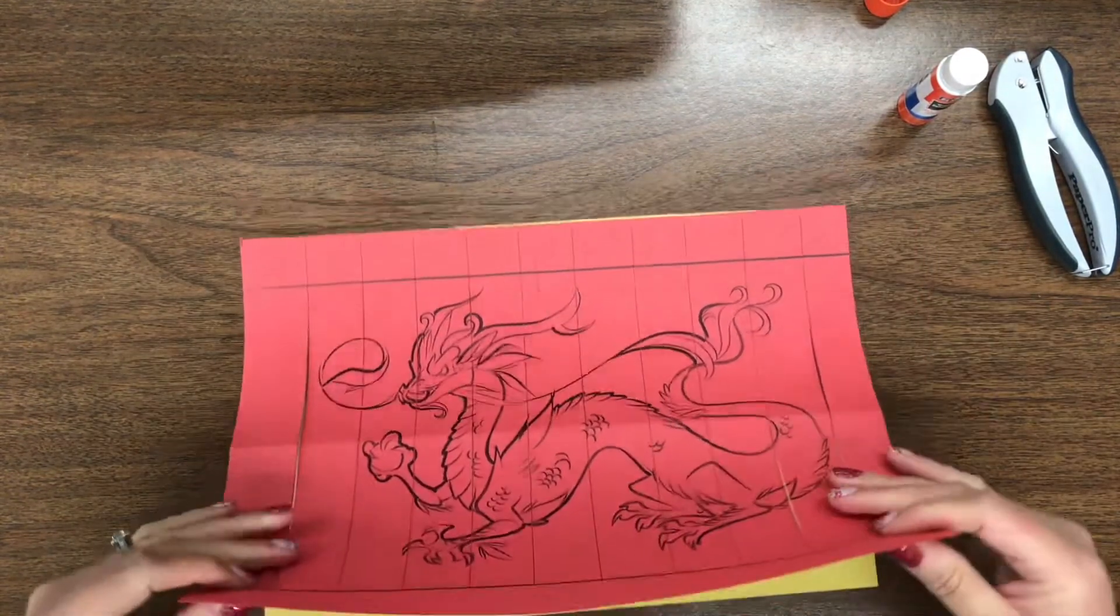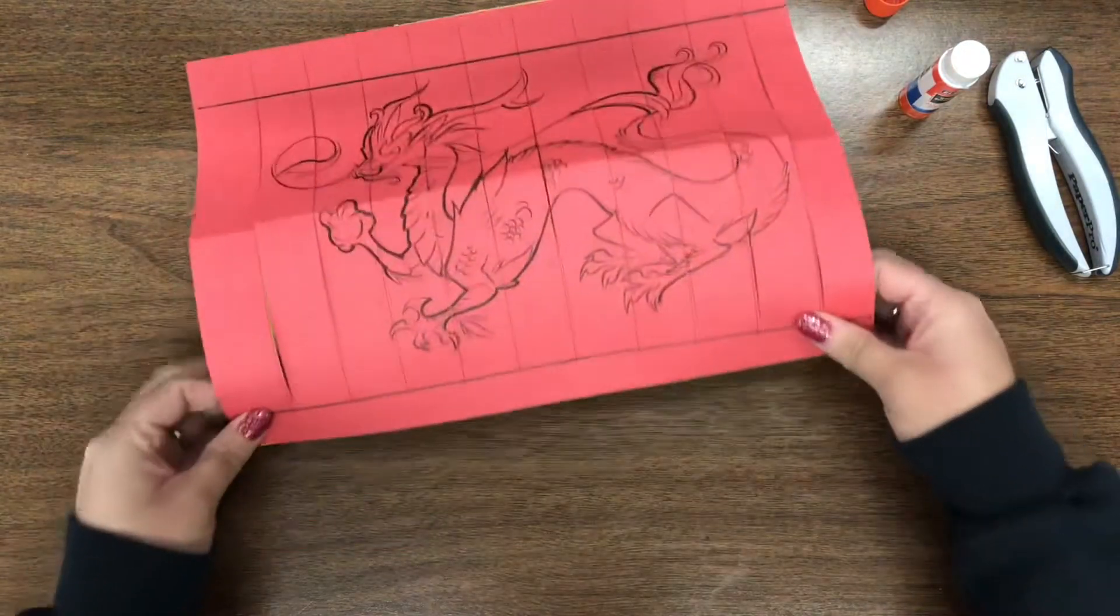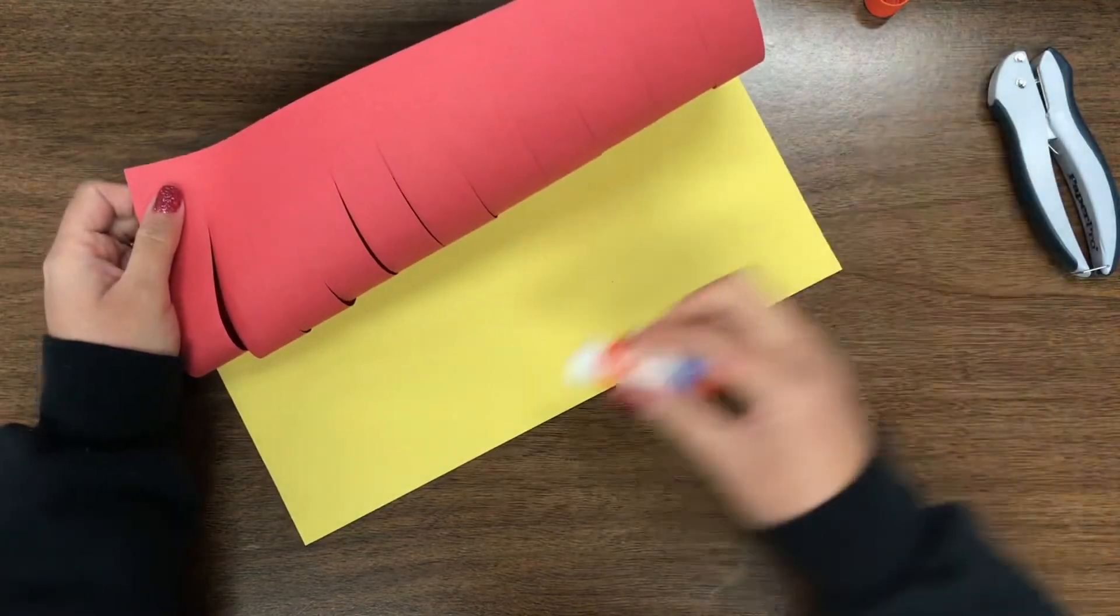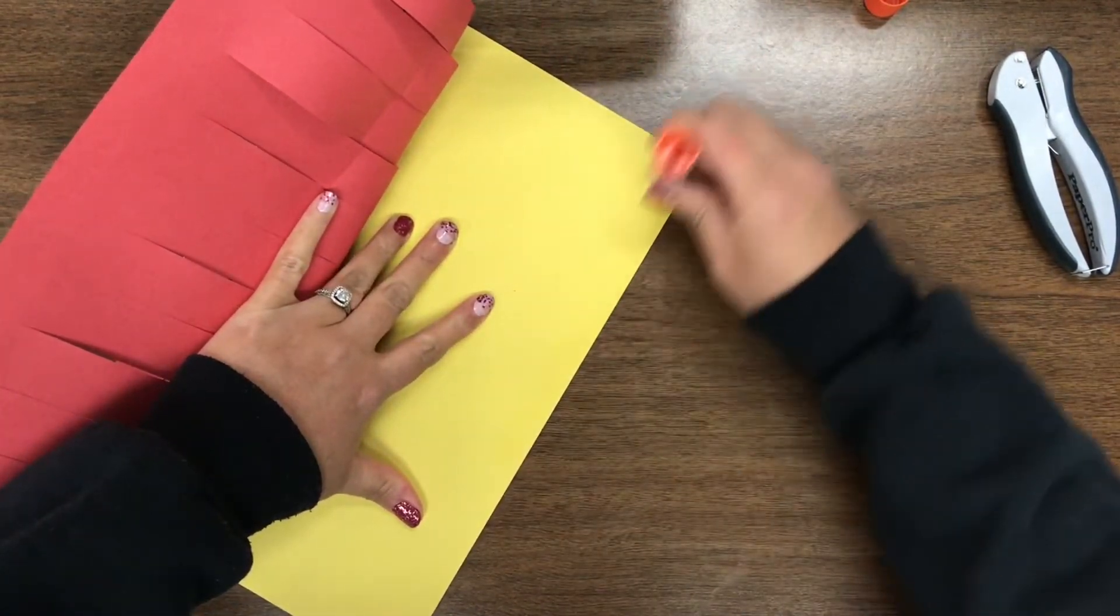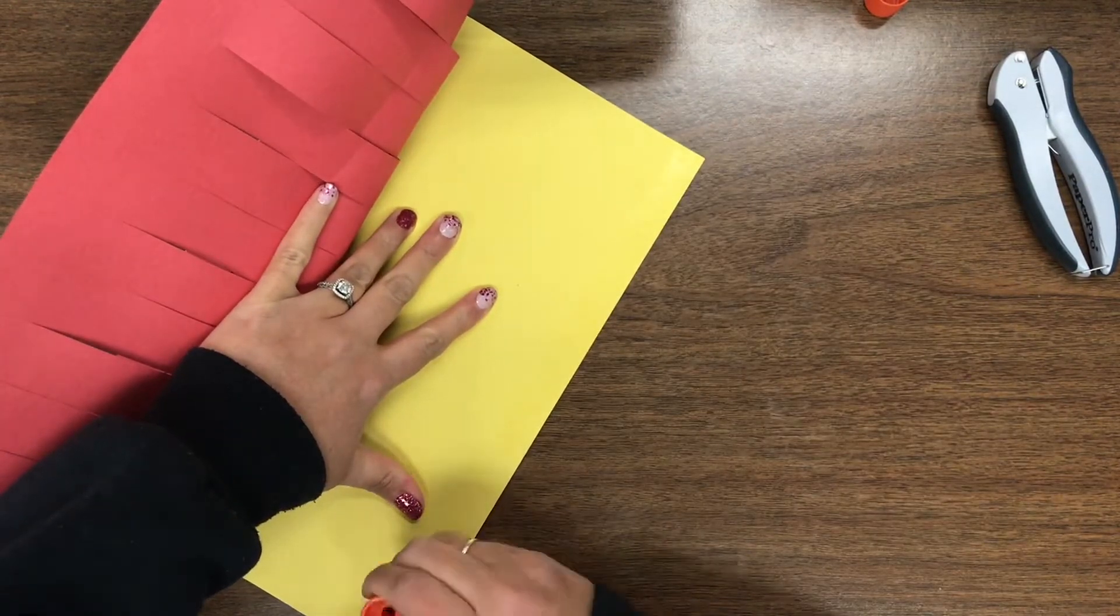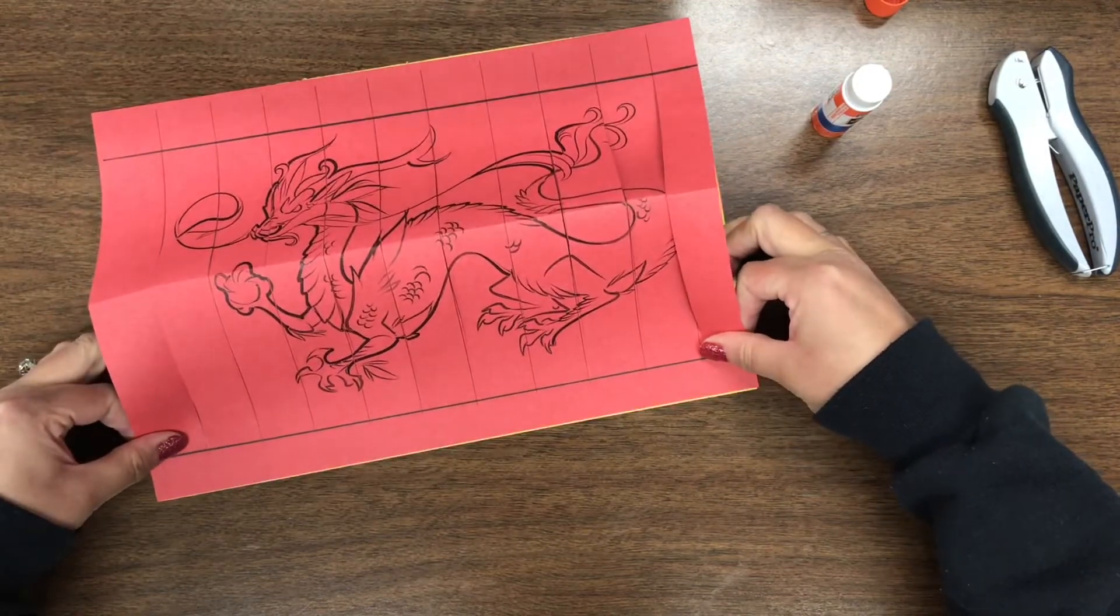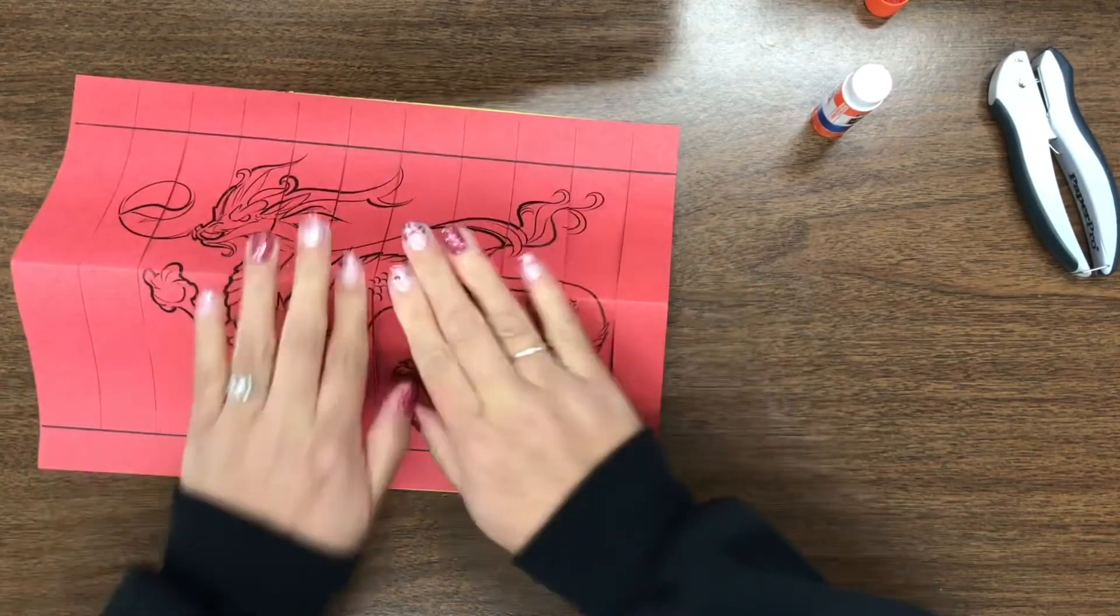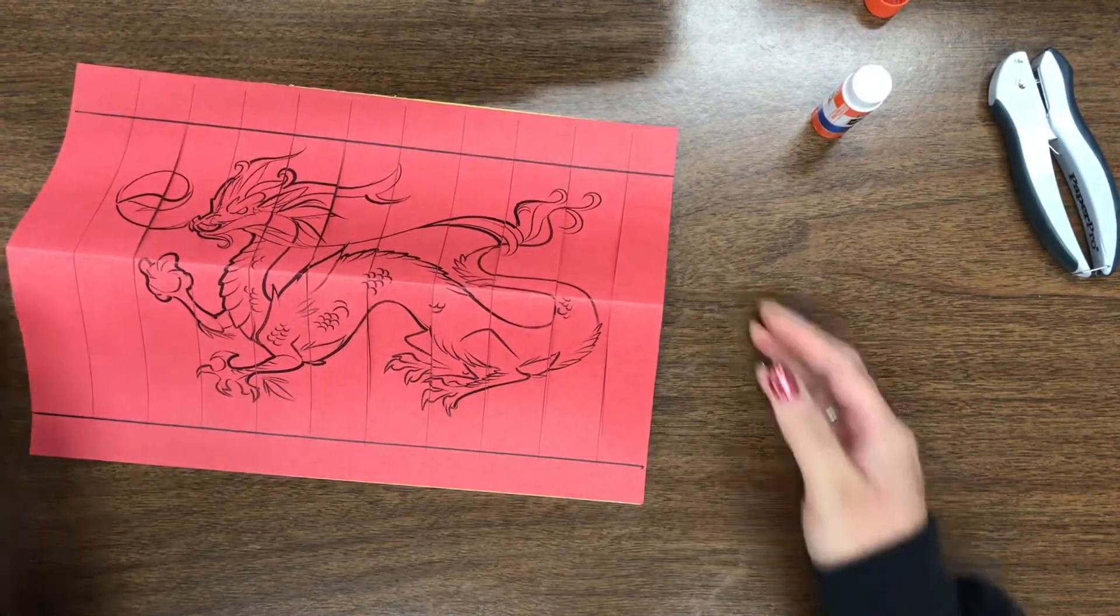Now the next part is gonna be kind of tricky. The next part we're gonna glue it to the bottom of this part of the yellow paper. So what I'm gonna do is I'm gonna put some glue at the bottom of the yellow paper all the way to the edges and then I'm gonna do the same thing. I'm gonna make this red paper go right to the edge. Squish it down so you can see how it's kind of sticking up. That's what you want. You want it to be sticking up.